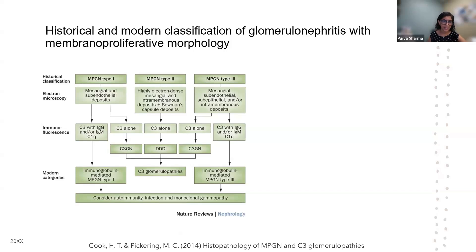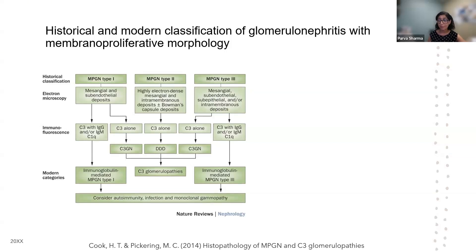Historically, C3G was classified as different types of MPGN: type 1, type 2, and type 3. We ultimately realized that based on electron microscopy, if there were mesangial and subendothelial deposits, and on immunofluorescence there was C3 alone, it was classified as C3GN. MPGN type 2 was your classic dense deposit disease — highly electron-dense mesangial and intramembrane deposits with C3 alone — that was dense deposit disease.